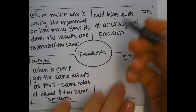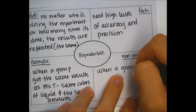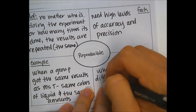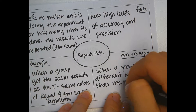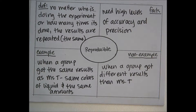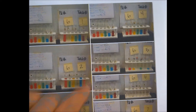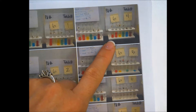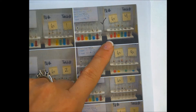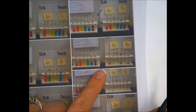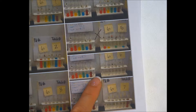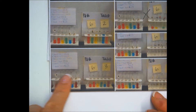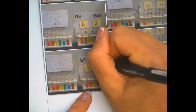A non-example would have been when a group got different results. Looking at 6th period here, on the left side are my results and on the right side are their results. Table 4 was reproducible. Table 5 had some of the same colors, but they're not in the right order and don't have the same amount — so that would have been not reproducible. Table 3 had the same colors and the same amount, so table 3 would have had reproducible results.